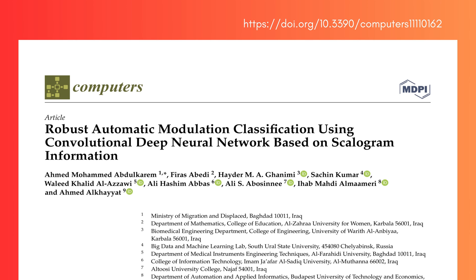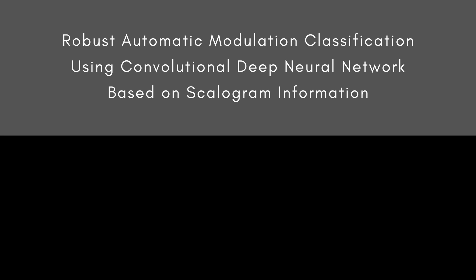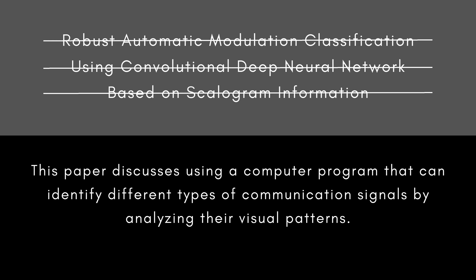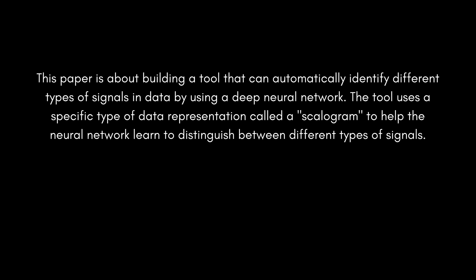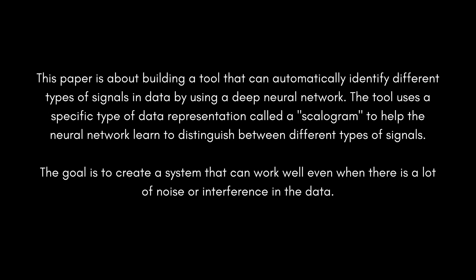Let's start by translating the title into more accessible language. In very simple terms, the paper discusses using a computer program that can identify different types of communication signals by analyzing their visual patterns. More specifically, it's about building a tool that can automatically identify different types of signals in data using a deep neural network. The tool uses a specific type of data representation called a scalagram to help the neural network distinguish between different signal types, with the goal of working well even in the presence of a lot of noise or interference.